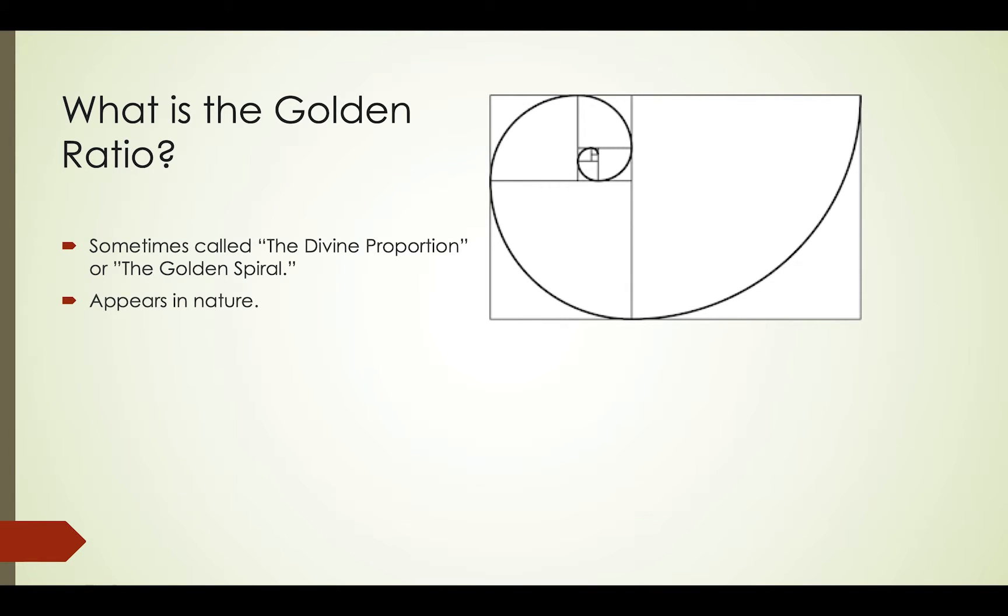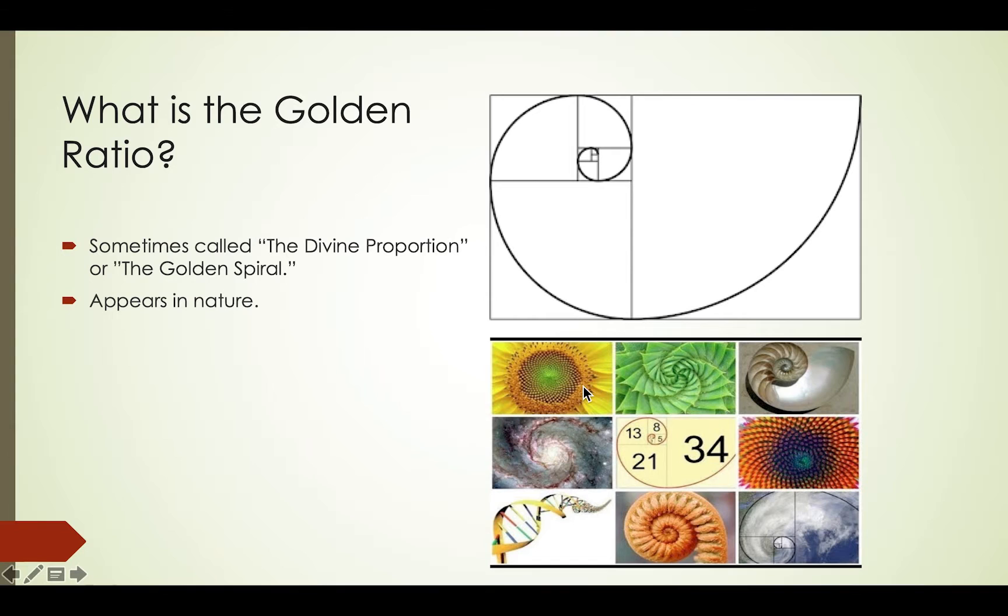Because it's found in nature quite a bit, here we have some examples of the golden ratio in plant life, in astronomy, biochemistry, and in marine wildlife. The golden ratio has a proportion of one to one point six one eight.